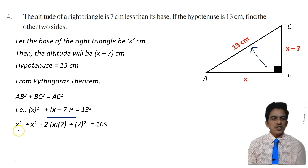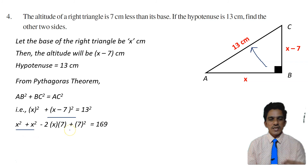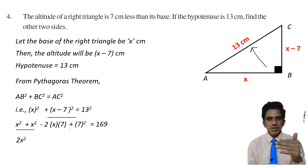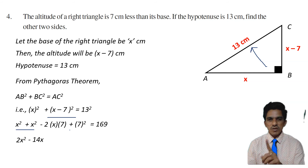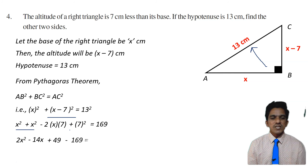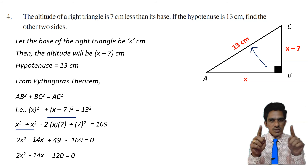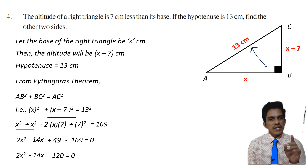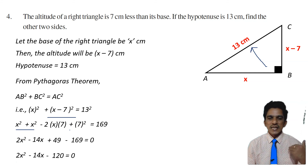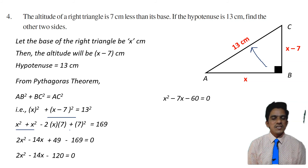Expanding (x minus 7) whole squared using (A minus B) squared equals A squared minus 2AB plus B squared: it becomes x squared minus 14x plus 49. So on the left side: x squared plus x squared minus 14x plus 49 equals 2x squared minus 14x plus 49. On the right side is 169. Transposing: 2x squared minus 14x plus 49 minus 169 equals 0, giving 2x squared minus 14x minus 120 equals 0. Taking out 2 as common factor: x squared minus 7x minus 60 equals 0.